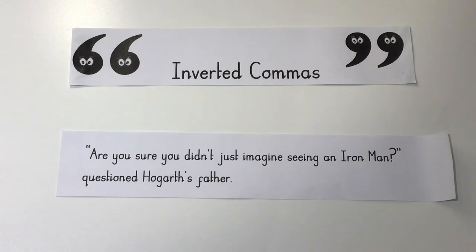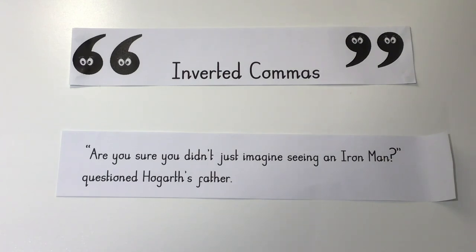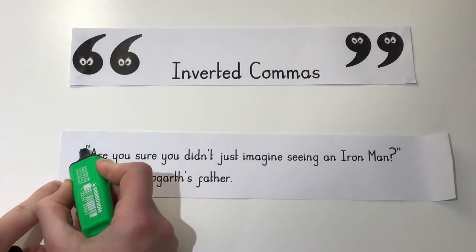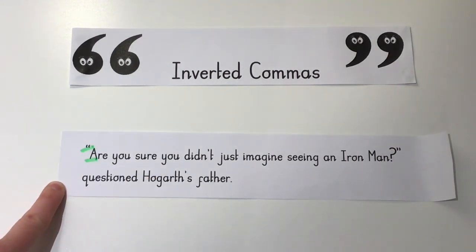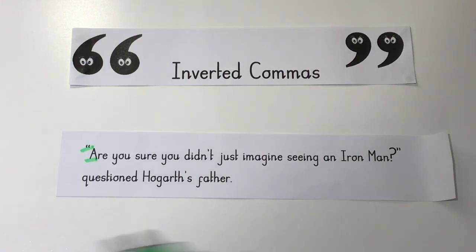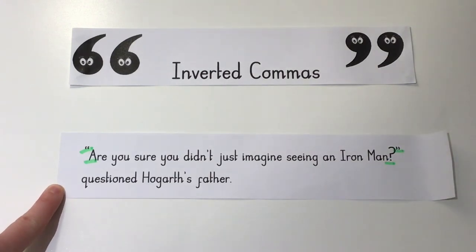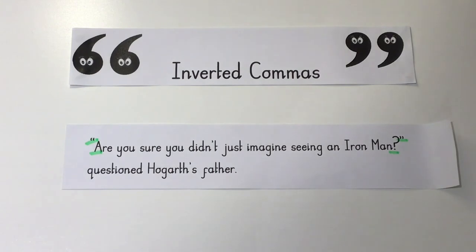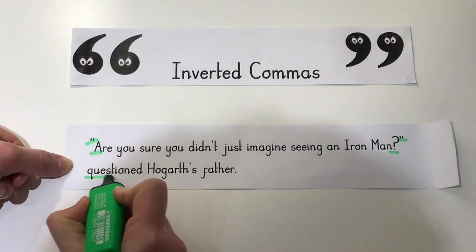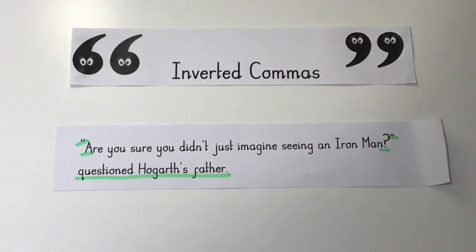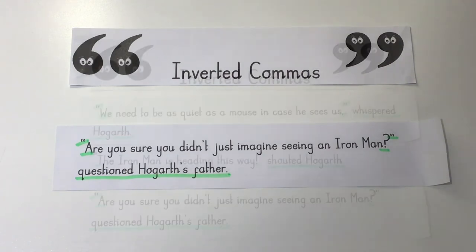This time we have somebody different speaking — Hogarth's father — and he is questioning Hogarth. Let's read it: "Are you sure you didn't just imagine seeing an iron man?" questioned Hogarth's father. We have our opening inverted commas, our capital letter to begin the direct speech, and because Hogarth's father is asking a question we need a question mark at the end of the direct speech, followed by our closing inverted commas. The reporting clause — questioned Hogarth's father — shows he feels a little confused and isn't quite sure whether to believe Hogarth.